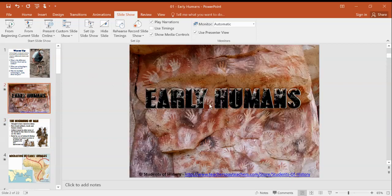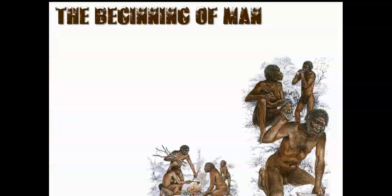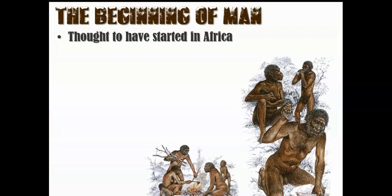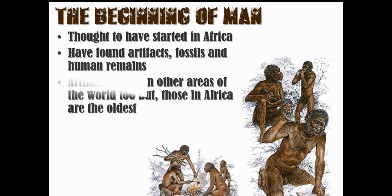This is our first lesson over early humans. Early humans — where did we all come from? We believe that history started in Africa. We found a bunch of artifacts and fossils, and the oldest ones found all around the world have been in Africa. Because of this, we believe that everybody originated in Africa — it doesn't matter what your race or culture is.